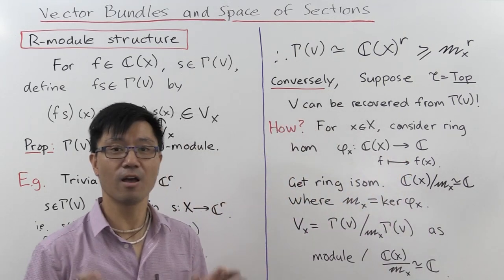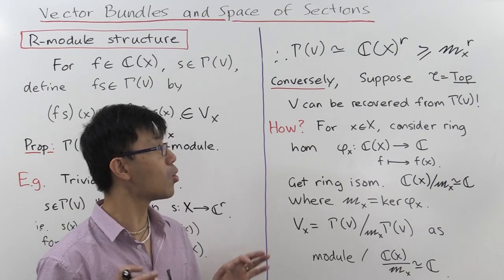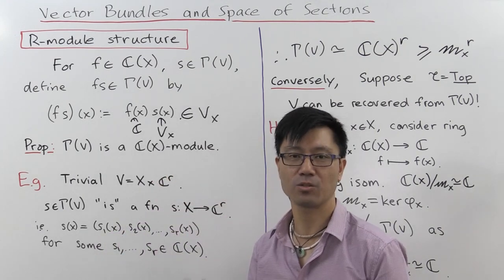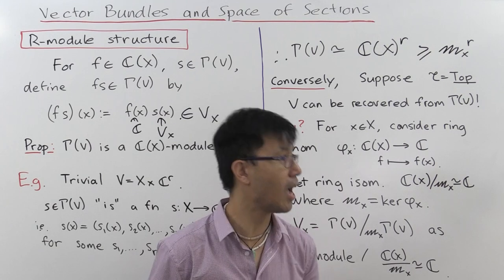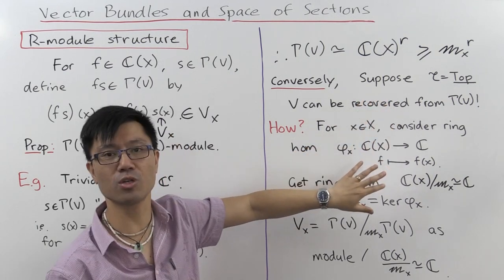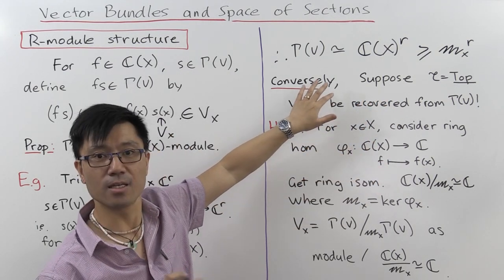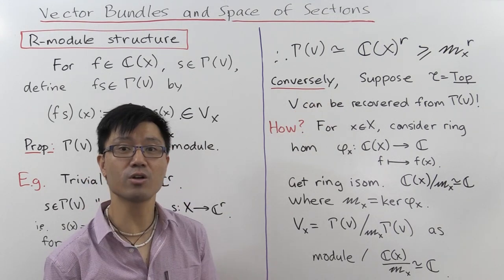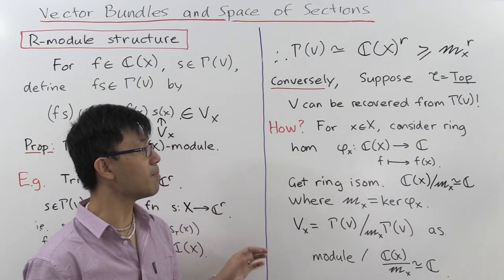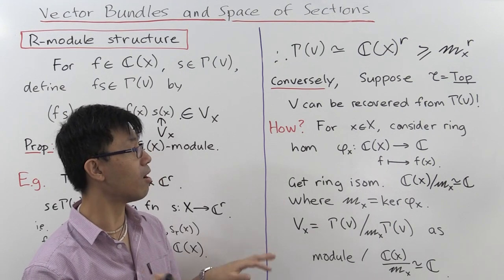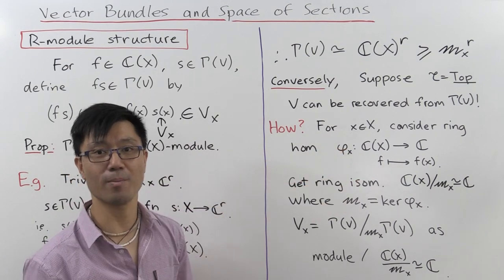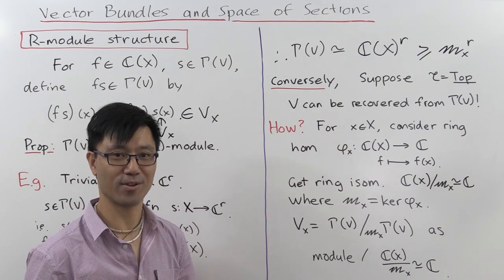To sum up: in this video we've seen that vector bundles give you modules as well — modules over the algebra of functions. That means that the theory of vector bundles is strongly related to module theory. A natural question is: what types of modules can you get? Are they just very special, or are they fairly typical? The answer is that they actually correspond to projective modules — something I'll show you in another video in this playlist. That means this gives you an alternative way of looking at projective modules: you can actually view them geometrically. I hope you enjoyed this adventure in pure mathematics.